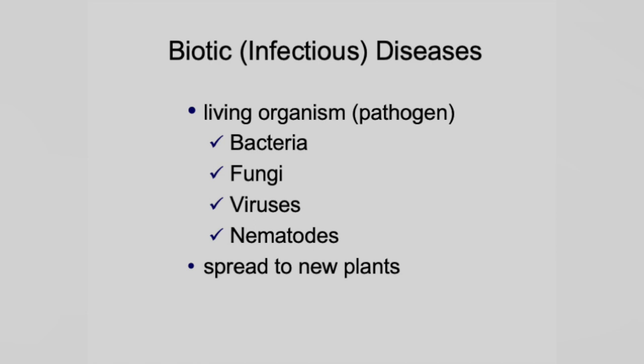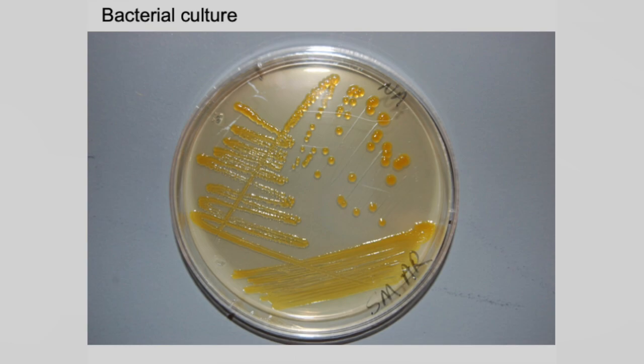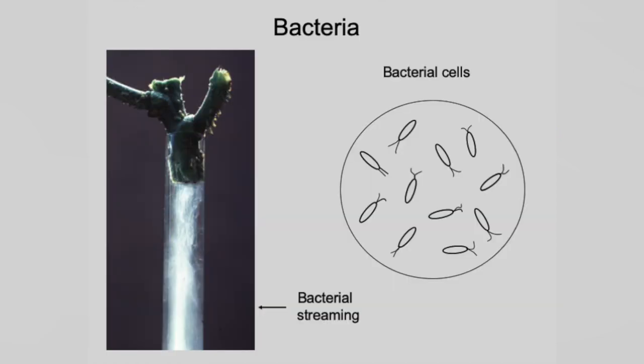Infectious diseases are caused by microorganisms: bacteria, fungi, viruses, nematodes. They may spread from plant to plant, usually starting in a few areas or on a few leaves and working their way up. This is what bacteria looks like — just gooey stuff. This is Xanthomonas, which causes bacterial spot on tomatoes and peppers.